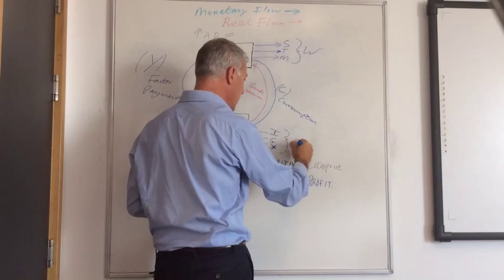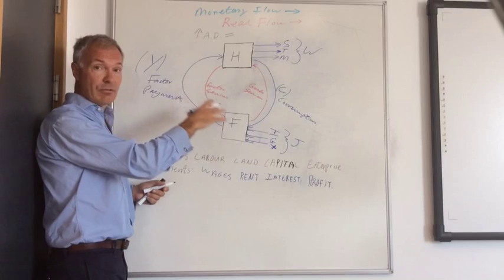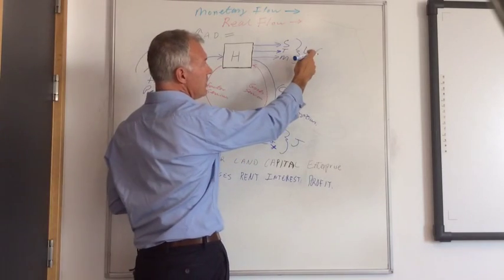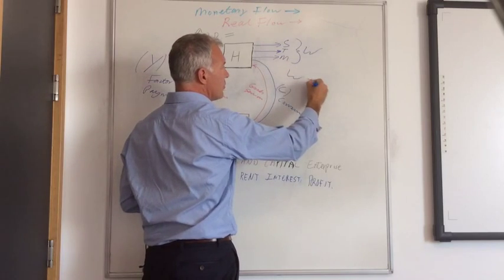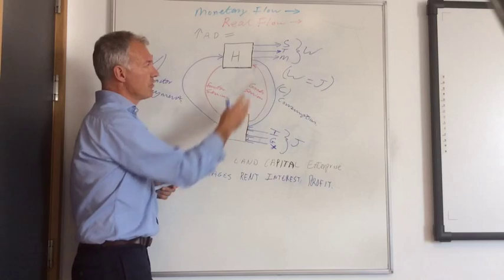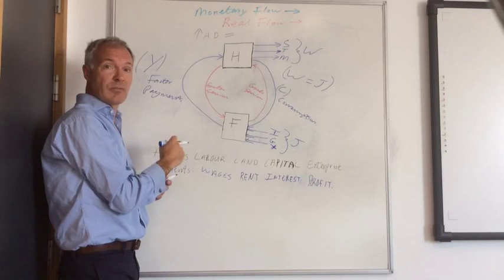So we've got three injections and three withdrawals. So if the economy is to remain in equilibrium and balance, and income is not going to increase, we need the level of withdrawals to equal the level of injections into the circular flow. So if those two balance, then the circular flow will remain stable.